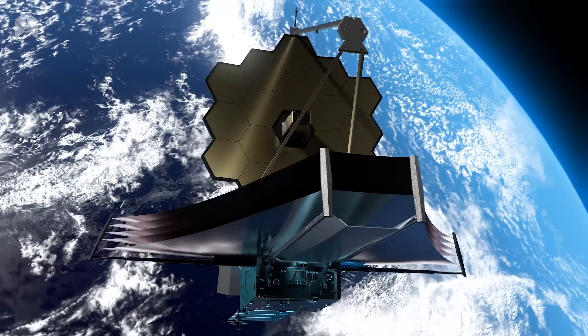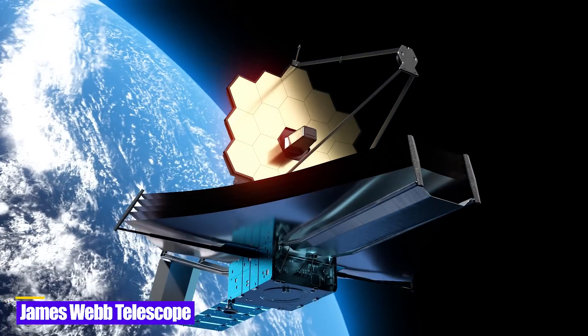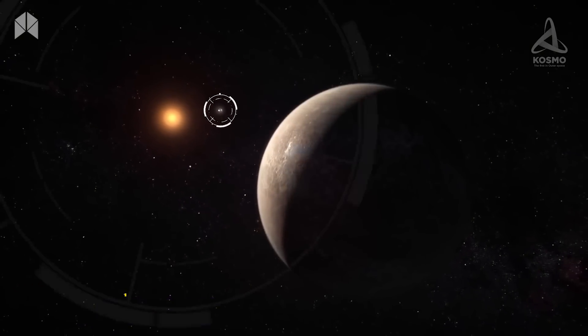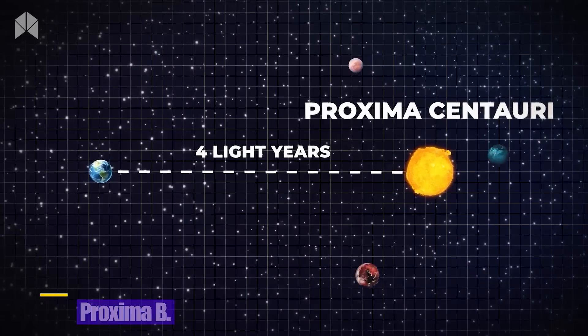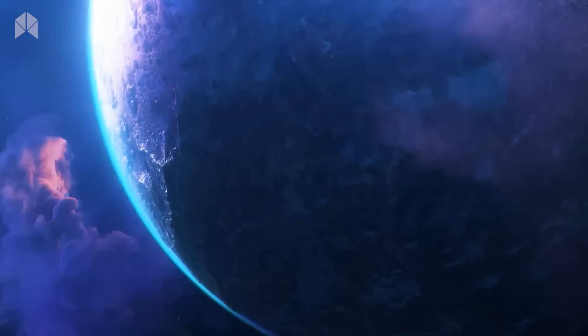NASA is utilizing the powerful James Webb telescope to search for potential artificial light on Proxima b, an exoplanet located four light-years away. The finding of such lights could provide compelling proof that extraterrestrial life exists.